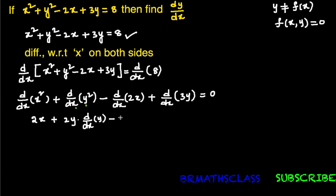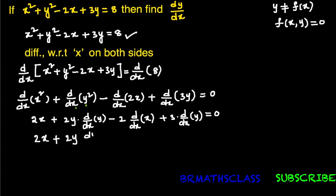Continuing: minus d/dx of 2x — here 2 is a constant, taken outside — giving 2 × d/dx of x; plus d/dx of 3y, written as 3 × d/dx of y = 0. Simplifying: 2x + 2y·(dy/dx) − 2×1 + 3·(dy/dx) = 0.